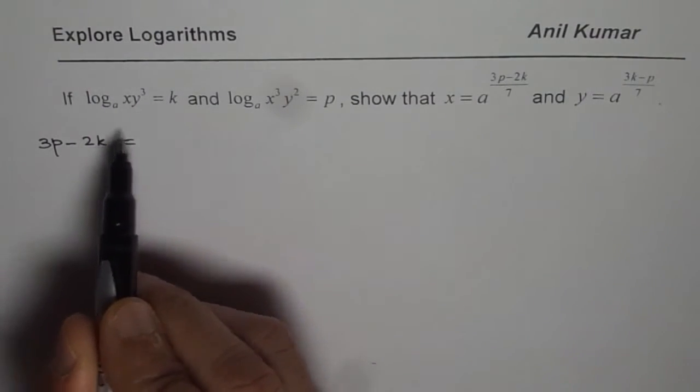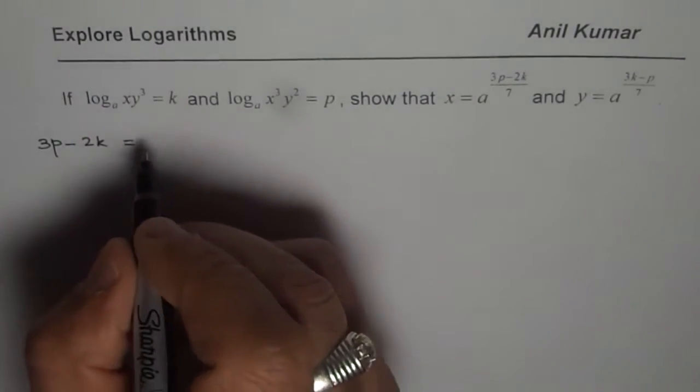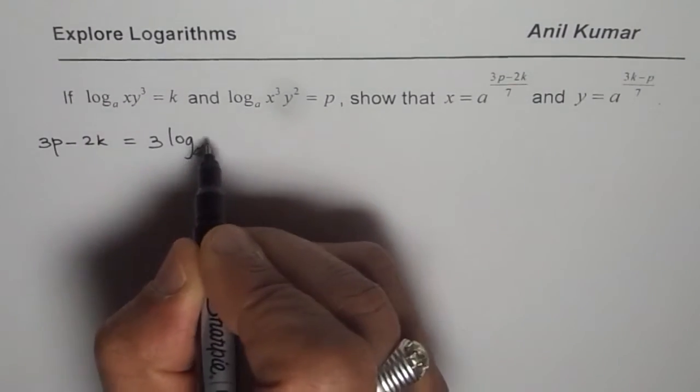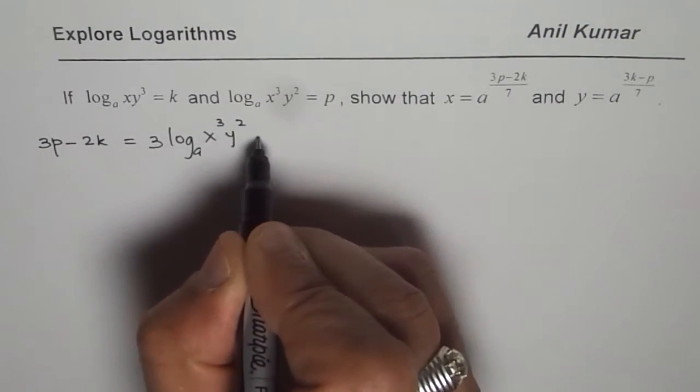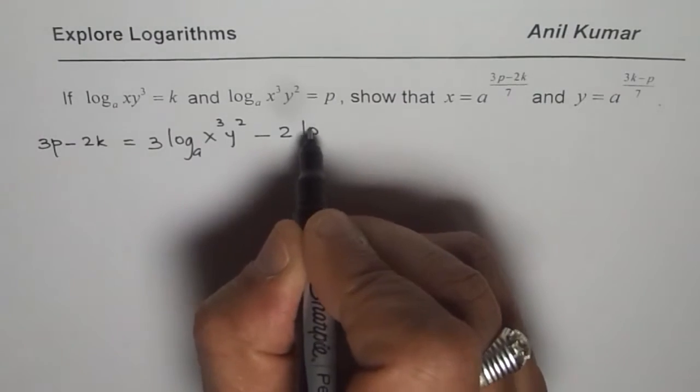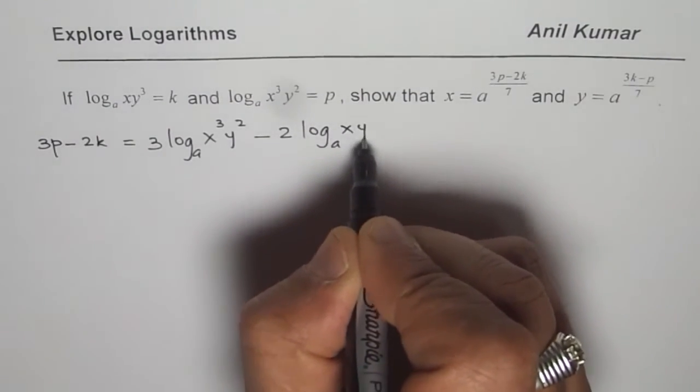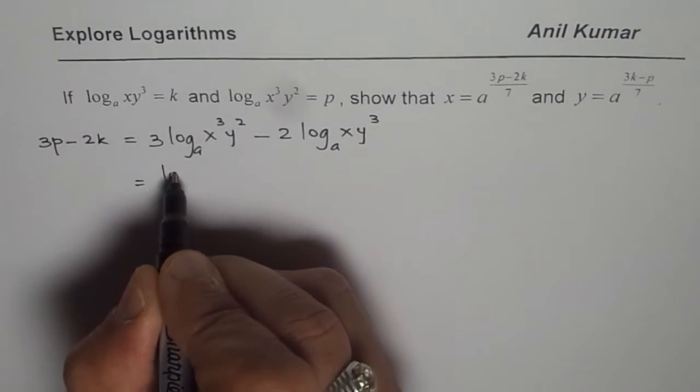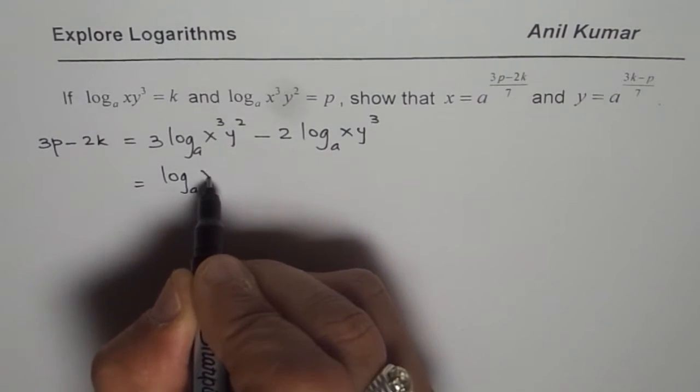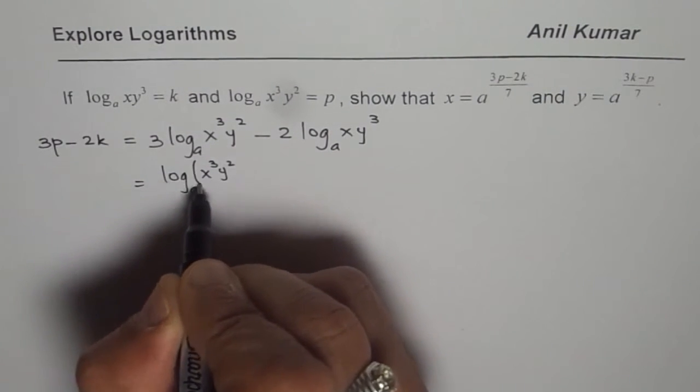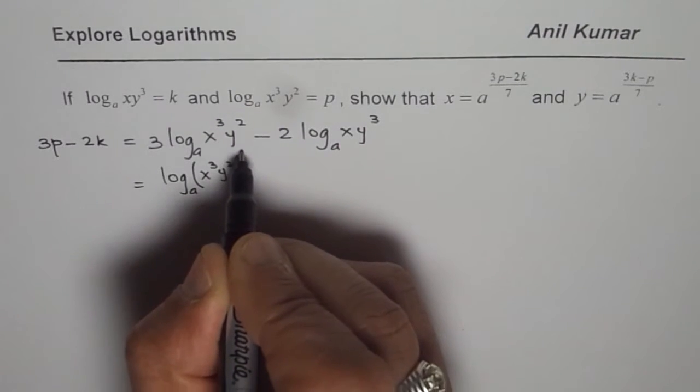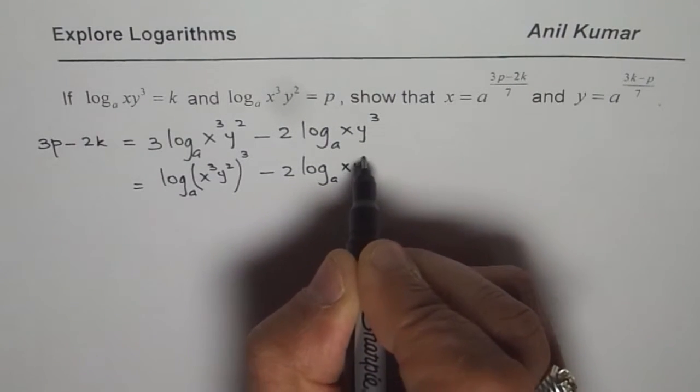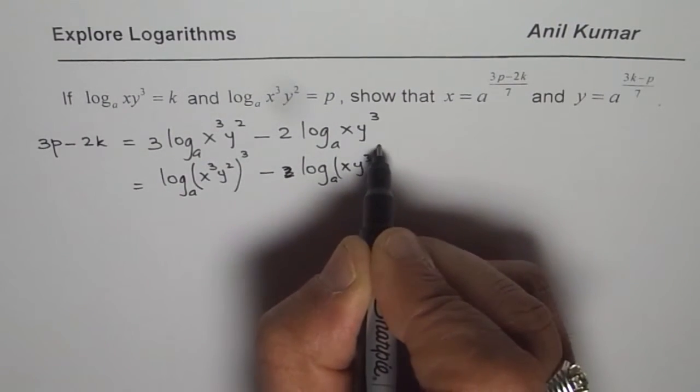So let us replace p and k with what is given to us. So we will write 3 times p, which is log to the base A of x³y², minus 2 times k, which equals log to the base A of xy³. Now we can apply the power rule: cube everything because of this 3, minus 2 times log base A of xy³. Now instead of 2 we will square this.